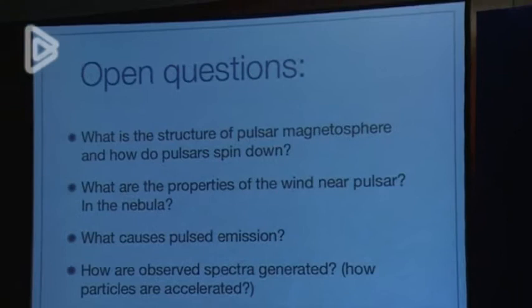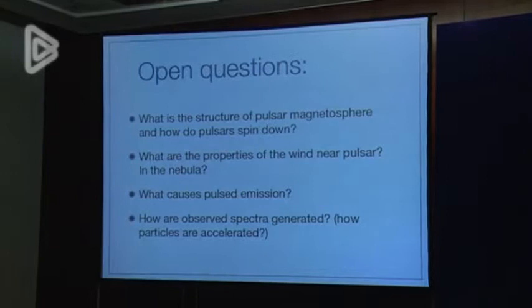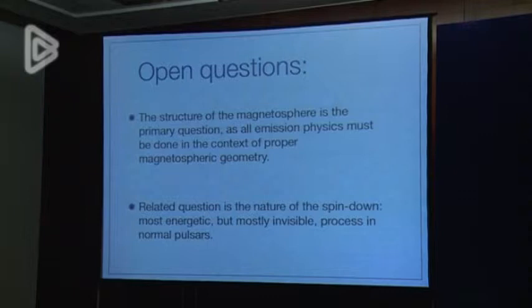The questions that are still with us include: what is the structure of the magnetosphere, and how does the pulsar spin down — how does it spin down at different stages of its life? We want to understand the properties of the wind near and far from the pulsar in the nebula, and ultimately what causes the things that we see. The structure of the magnetosphere is a really fundamental question because all of the emission physics has to go on within the skeleton of the pulsar magnetosphere.